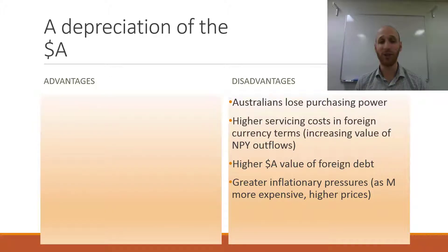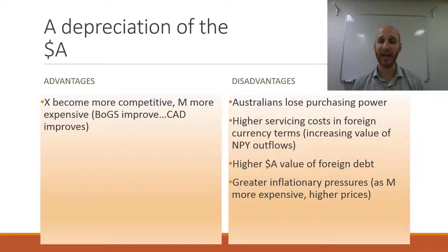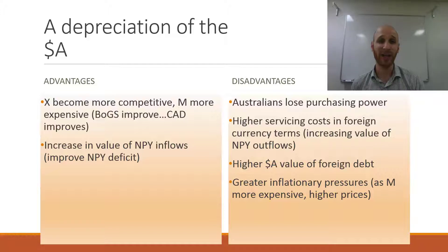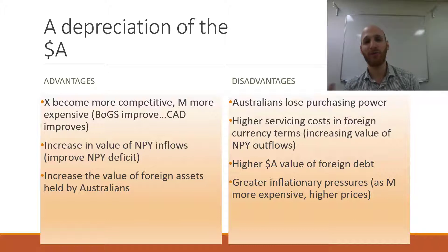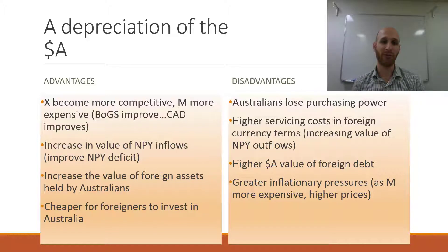Now the advantages of a lower Australian dollar. Exports become more competitive, and as imports become more expensive, the balance of goods and services will improve and the current account deficit could improve. A lower dollar will also increase the value of NPY inflows, as foreign currency coming in for capital outflows should improve the NPY deficit. It will also increase the value of foreign assets held by Australians — shares in American companies denominated in US dollars will be worth more in Australian dollar terms. It will also be cheaper for foreigners to invest in Australia, which could increase foreign investment.